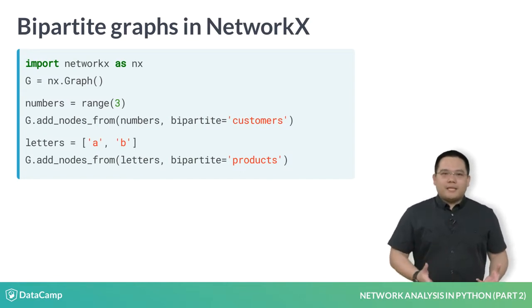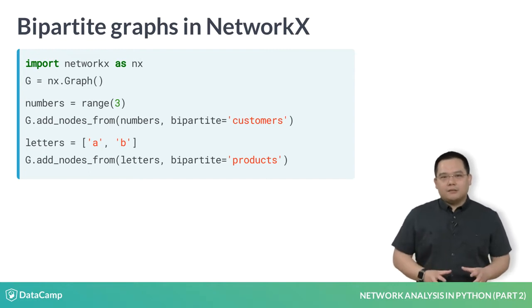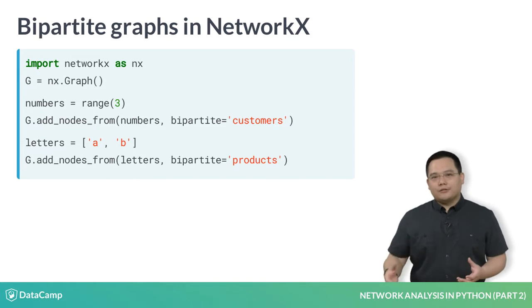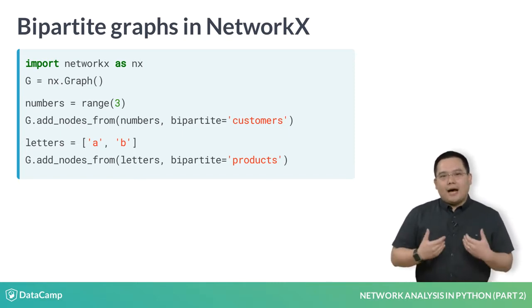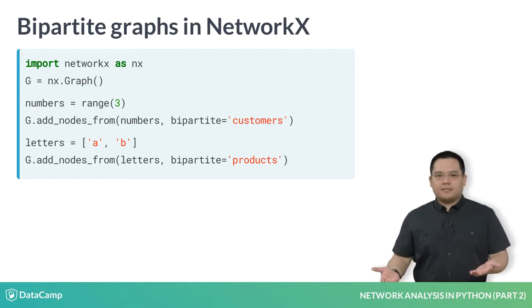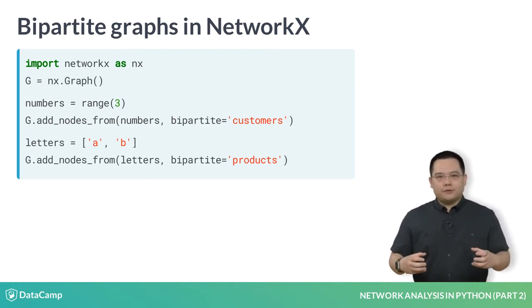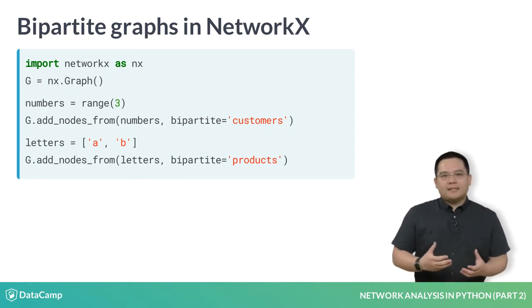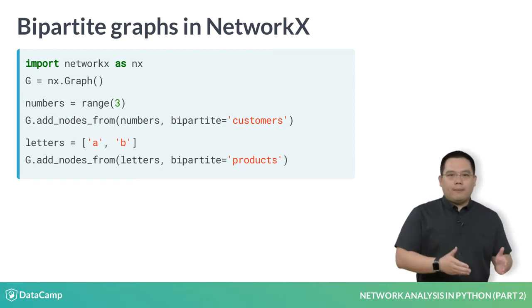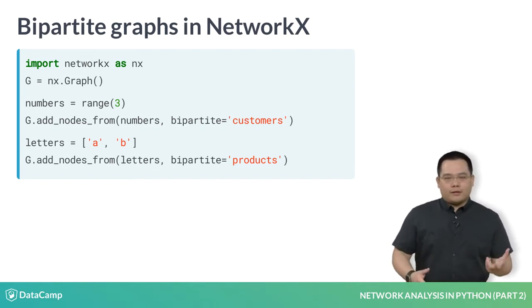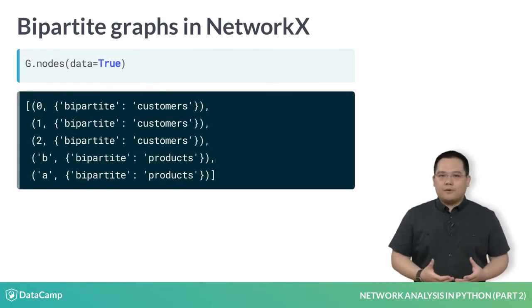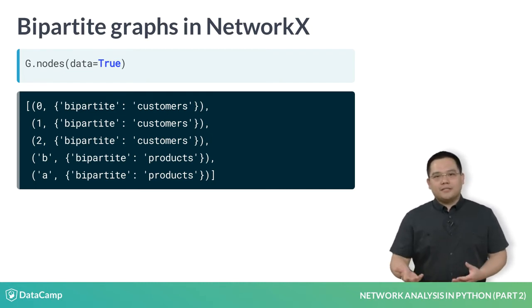How do we encode this information in NetworkX? Though it is not required by the API, by convention, bipartite information is encoded as part of the node attributes or metadata using the bipartite keyword. In the toy example, let's say we're modeling the connectivity between a customers and a products partition. Using the graph object's method add_nodes_from, passing in the list of nodes from each partition as the first argument, and by passing in the bipartite equals customers or bipartite equals products argument, the method will automatically create the node's metadata dictionary with a key bipartite and the corresponding value products or customers. If we inspect the nodes of the graph while passing in the data equals true argument, we'll see the partition information stored.